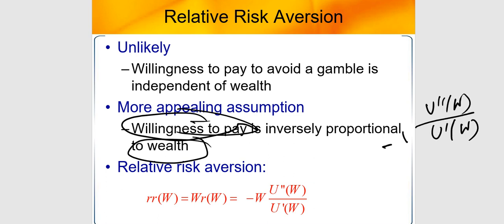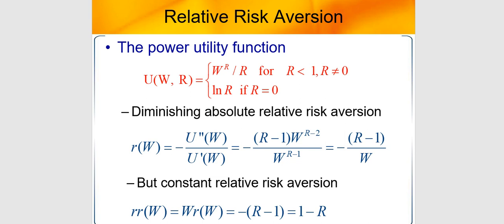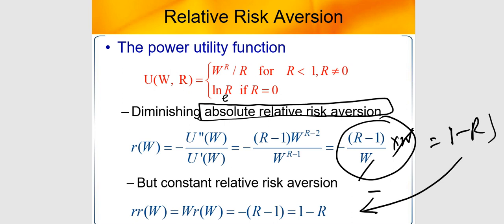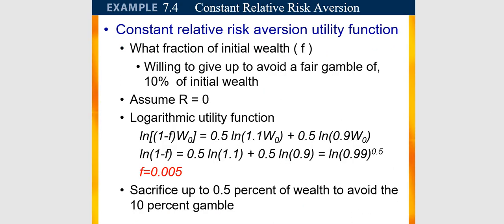To calculate RRA, for the power utility function u(w) equals w to the power r divided by r, the calculation gives RRA as 1 minus r — so constant relative risk aversion. For the log utility, multiplying the ARA ratio by w gives a specific constant value. There is diminishing absolute risk aversion and, in some cases, diminishing relative risk aversion.